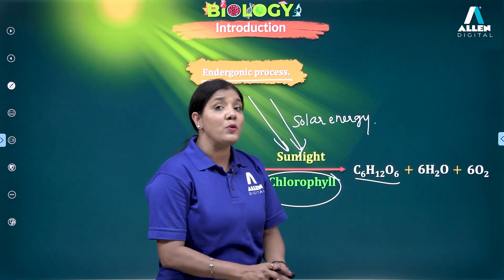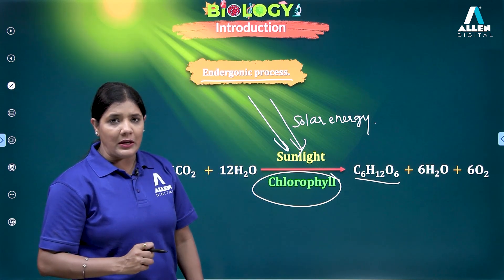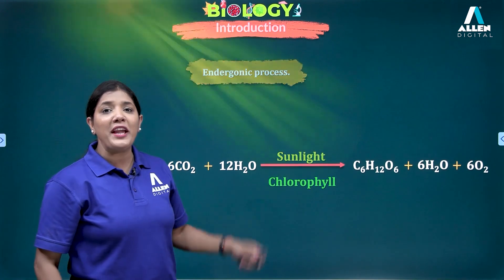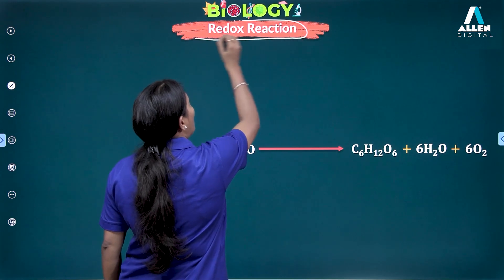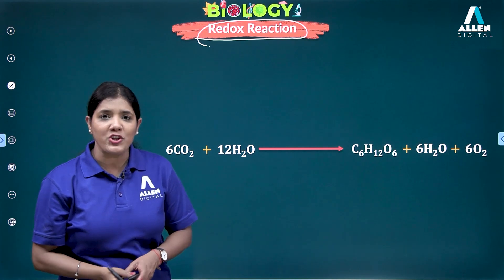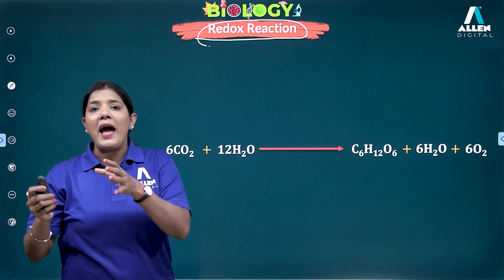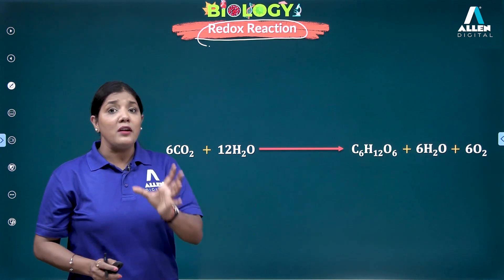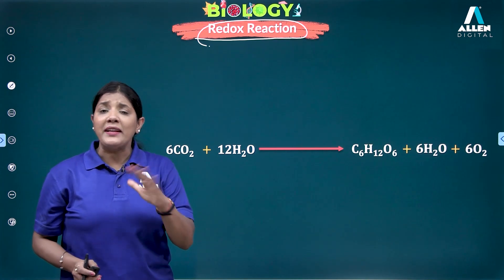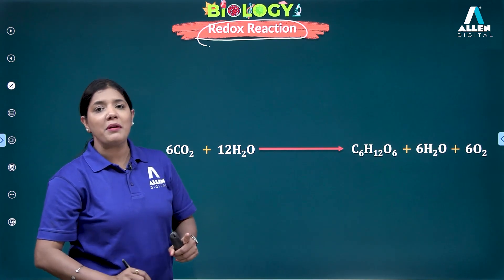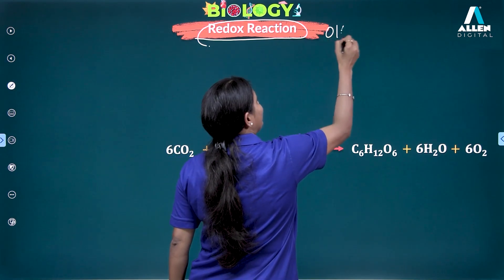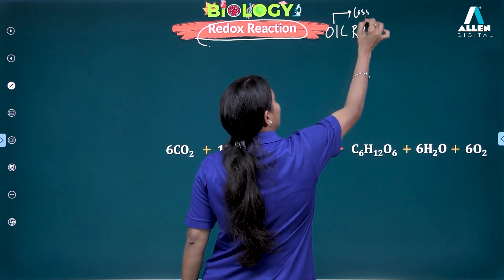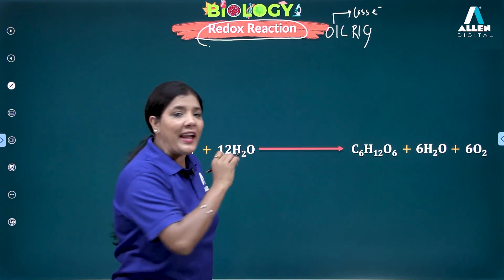Photosynthesis is also called a redox reaction — a reaction wherein both oxidation and reduction occur. To remember this, use the mnemonic OIL RIG: Oxidation Is Loss of electron, Reduction Is Gain of electron. The water you see in the equation is written to balance it, and this relates to the concept of redox reactions.